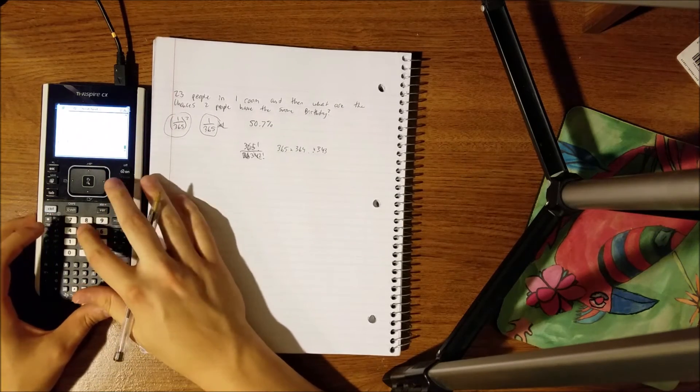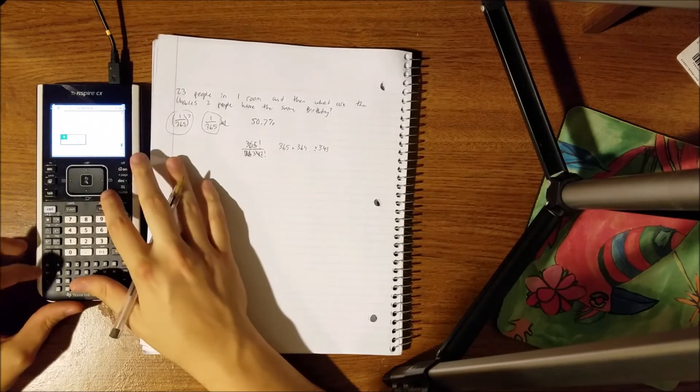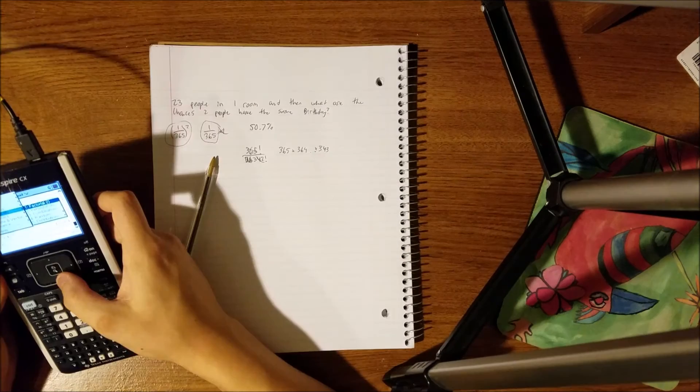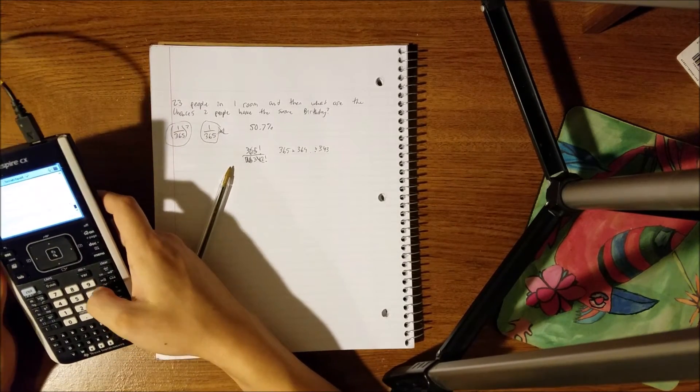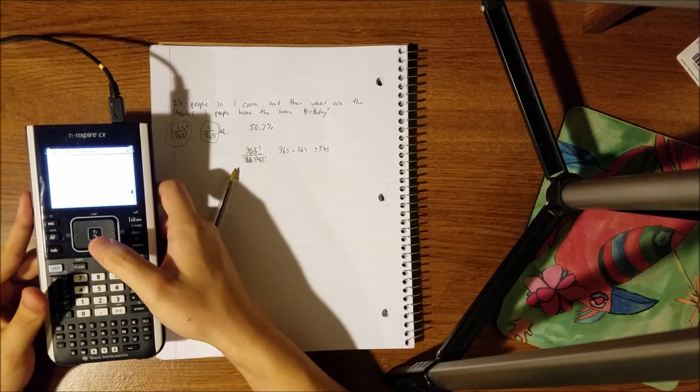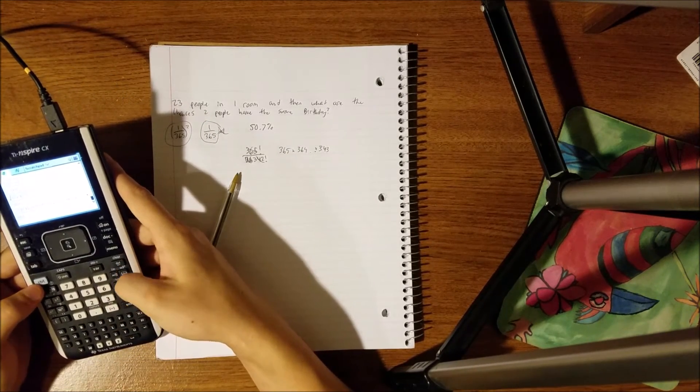So let's just do 365 factorial, where's the factorial, factorial, enter. All right, so that's a huge number, as you can see, and then we're going to do that divided by,